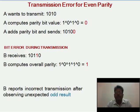Let us see about the transmission error. Suppose A transmits 1010 by computing even parity value 0, so the transmitted string is 10100. Assume that a bit error happens during transmission and B receives the message 10110. B computes the overall parity — it is expected to be 0 but is 1 in this case. Therefore, B reports incorrect transmission after observing the unexpected odd result.